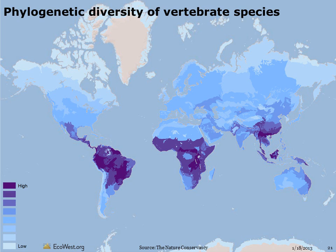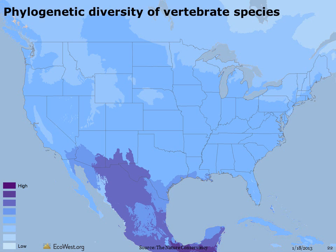One way to summarize biodiversity is to look at the evolutionary distinctiveness of species in a given location. This map shows the phylogenetic diversity of terrestrial vertebrates. Phylogenetics is a measure of how closely related a group of species is; an ecoregion with high phylogenetic diversity has species more distinct from one another. The measure is calculated using a cladogram — the tree of life — a diagram showing how species have branched out due to evolution. Phylogenetic diversity is greatest around the tropics, and in the West, it tends to be highest in the desert southwest.